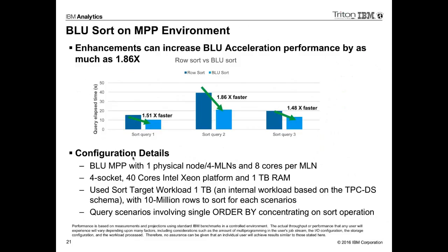There's a new sort algorithm — BLU sort is in many cases 50%, 60%, maybe two times faster, and this is true also in regular DB2. You get this benefit in row or columnar and MPP. You don't have to do anything — we're just taking advantage of new sorting algorithms. When you think about it, almost every OLAP function is a sort, so this is going to help everybody's workload.